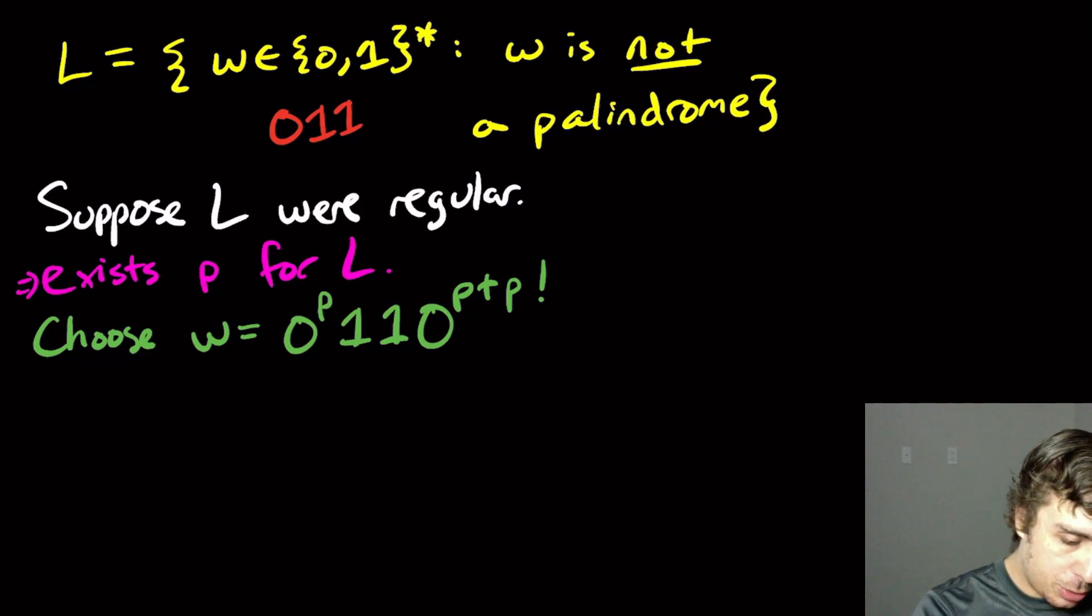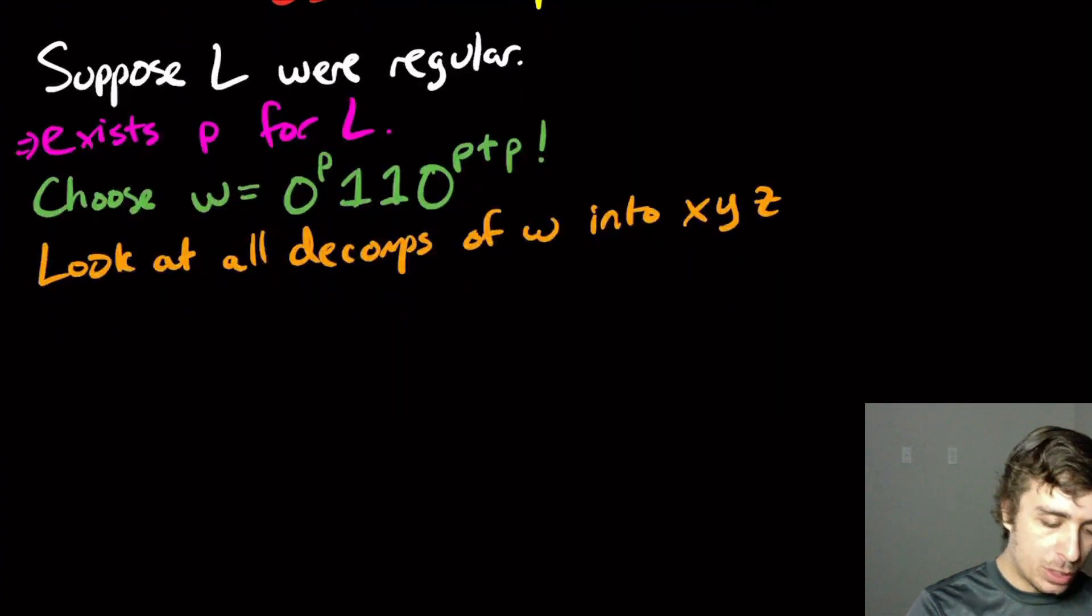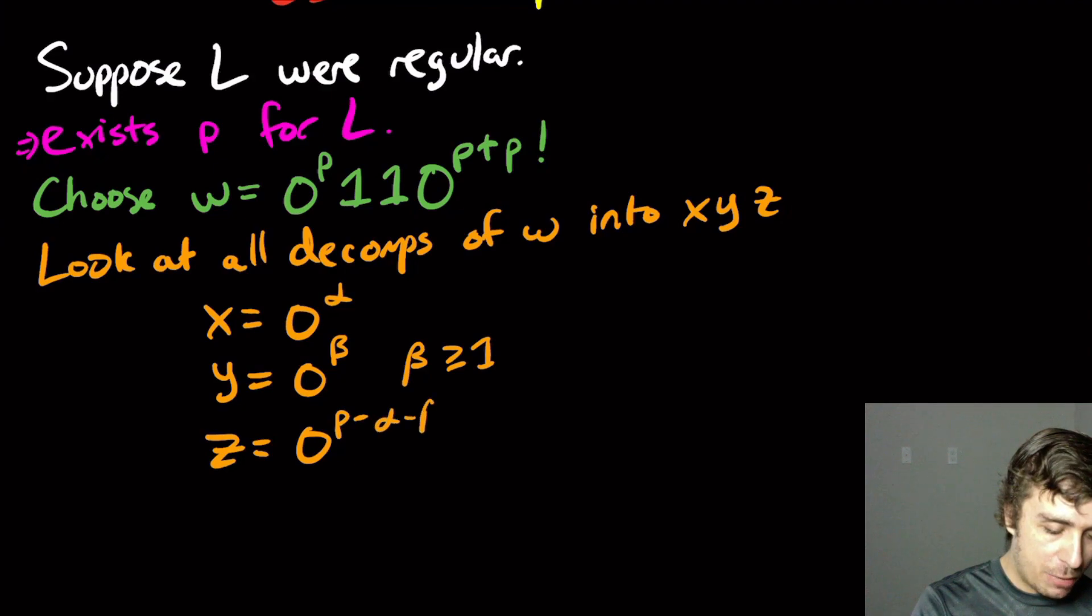Okay, so let's look at all decompositions. So look at all decompositions of W into X, Y, and Z according to the rules. So X is going to be some number of zeros in this case. Y is going to be some number of zeros in this case, also because the first P characters are zero, and that's one of the rules. And Z is going to be the whole rest of the string. So P minus alpha minus beta, that's the amount left. The two ones in the middle, and then 0 to the P plus P factorial.